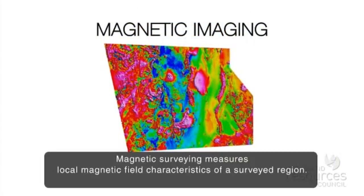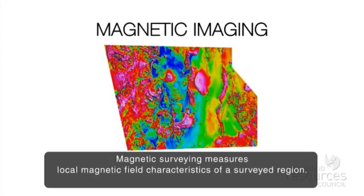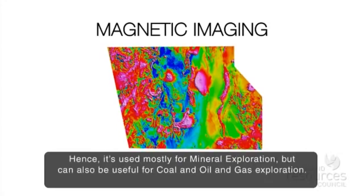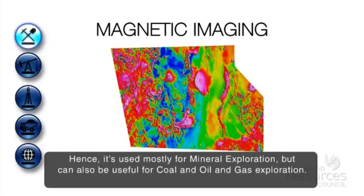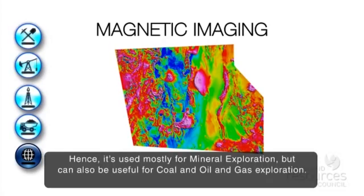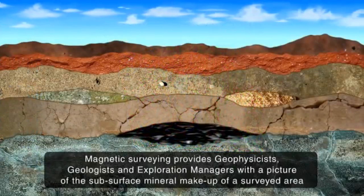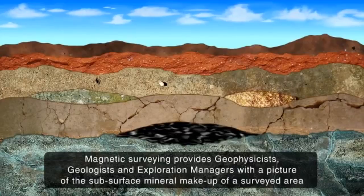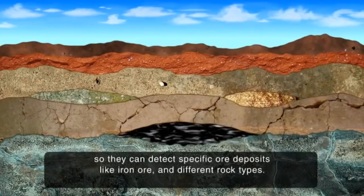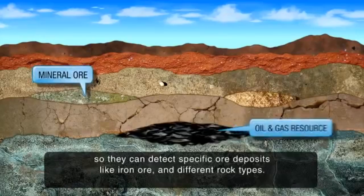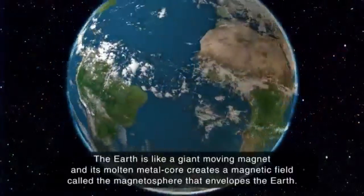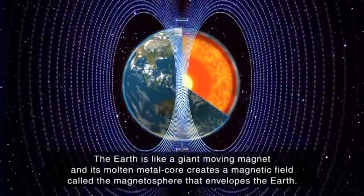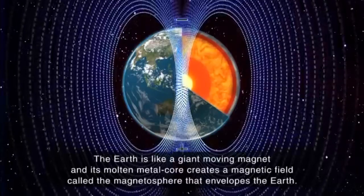Magnetic surveying measures local magnetic field characteristics of a surveyed region. The technology only detects minerals that respond to magnetic fields, so it is used mostly for mineral exploration, but can also be useful for coal and oil and gas exploration. Magnetic surveying provides geophysicists, geologists, and exploration managers with a picture of the subsurface mineral makeup of a surveyed area, so they can detect specific ore deposits like iron ore and different rock types. The Earth is like a giant moving magnet and its molten metal core creates a magnetic field called the magnetosphere that envelopes the Earth.